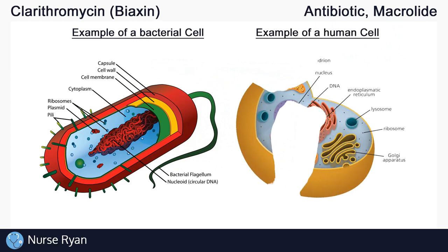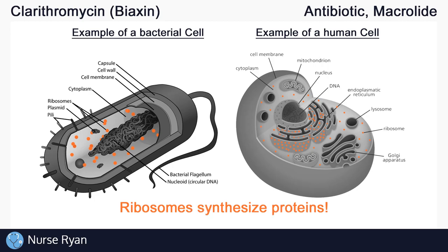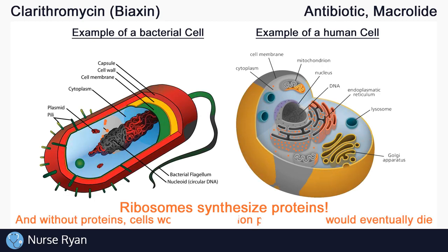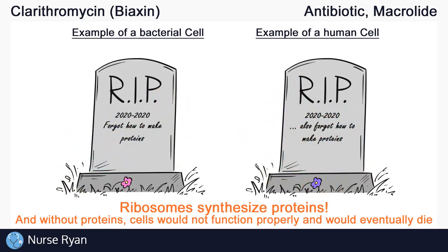To understand how macrolides work, we first have to understand a bit about the anatomy of cells. On the left is an example of a bacterial cell, and on the right an example of a human cell. You can see all their different little organelles, which each carry out specific functions that keep the cell alive. Inside both bacterial and human cells, ribosomes are present to synthesize proteins. Proteins are required in the normal function of cells, such as repairing damage to the cell or aiding in chemical processes. So if for some reason the ribosomes stop functioning and stop synthesizing these proteins, the cells would not be able to function and they would eventually die off.